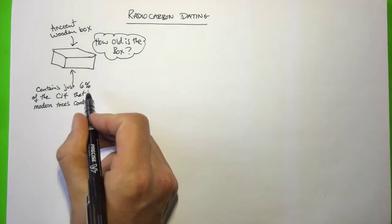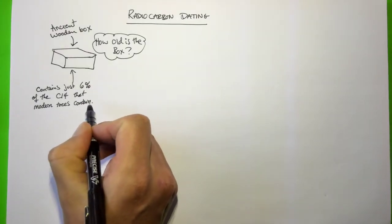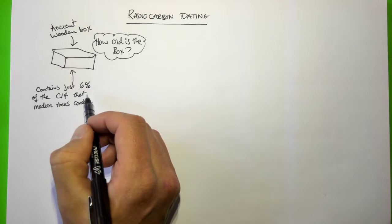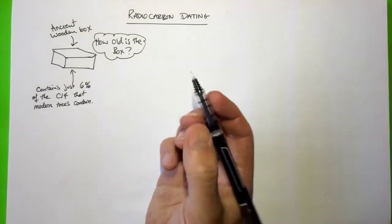And so when it says here that just 6% of the carbon-14 that modern trees contain, this means that scientists somehow took a sample of this wood, analyzed the carbon and found that there was far less carbon-14 compared to carbon than there should be if it was new. And so we could figure out how old it is.